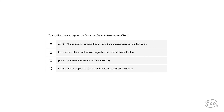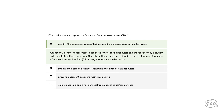Here's a question from Competency 4, Positive Behavioral Support Process. What is the primary purpose of a Functional Behavior Assessment, or FBA? The answer is: identify the purpose or reason that a student is demonstrating certain behaviors. Once the behaviors and reasons why they are occurring have been identified, the IEP team can formulate a plan to target or replace the behaviors.